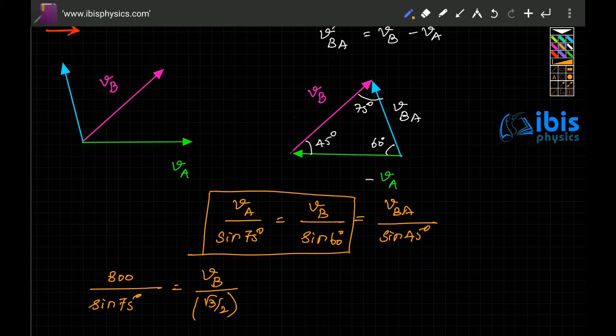So approximately I've calculated, VB equals 800 times root 3 by 2 divided by sine 75 degrees, which will be approximately 717 kilometers per hour.